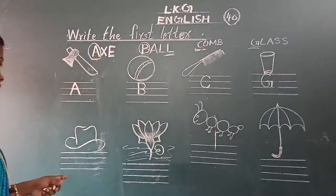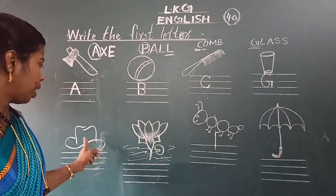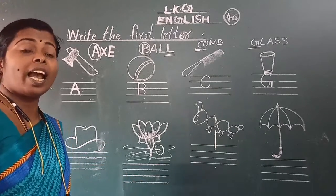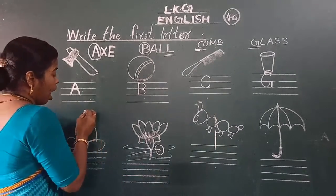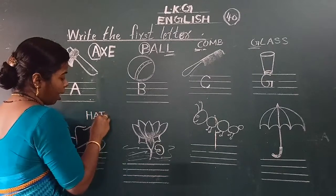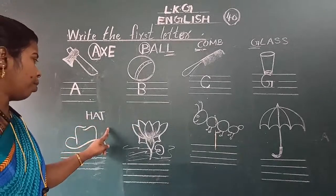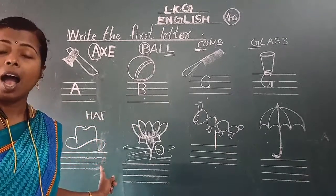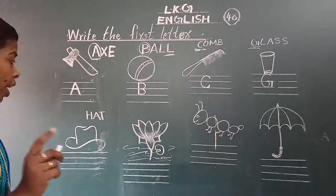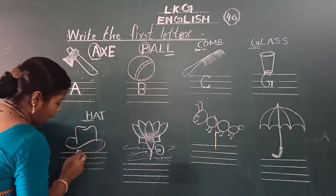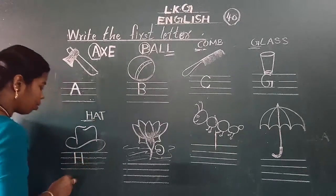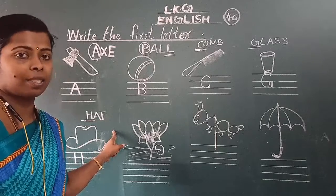Then next, what is this? See the picture. Yeh kya hai? Hat. Okay? This is a hat. H-A-T. Ithar kaunsa letter likhenge? H. Hat.